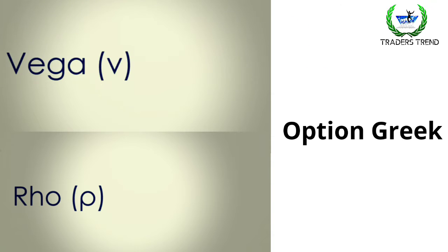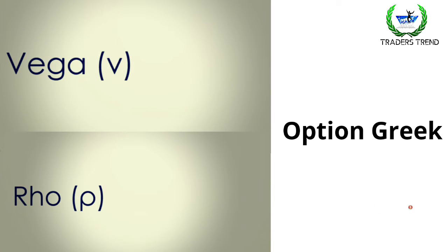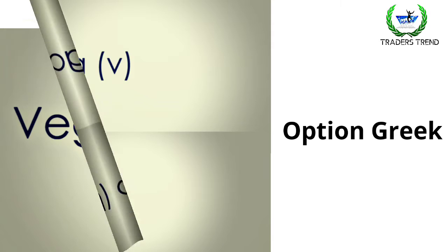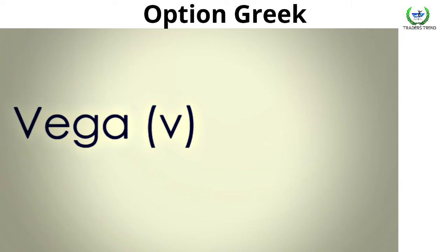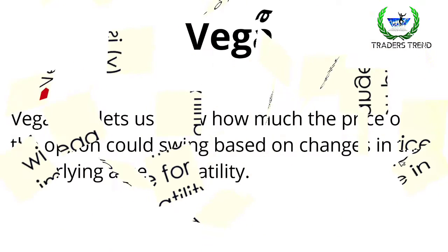Hi friends, I am Ruban. In this video, we discuss Vega and Rho — the fourth and fifth parameters for the option Greeks. Vega is the amount the option price will change for one point change in implied volatility.